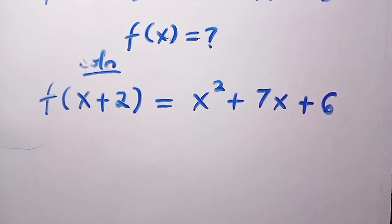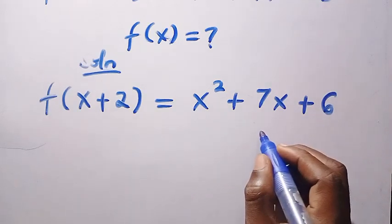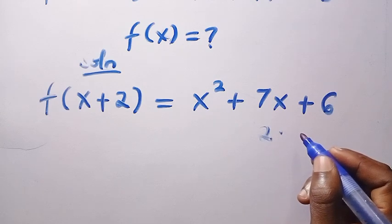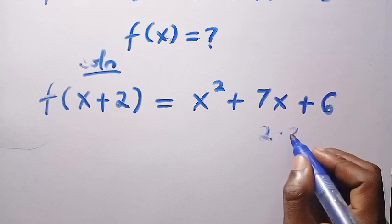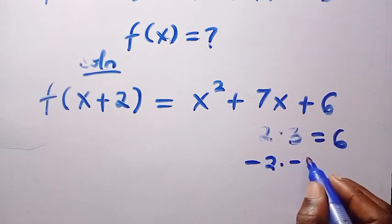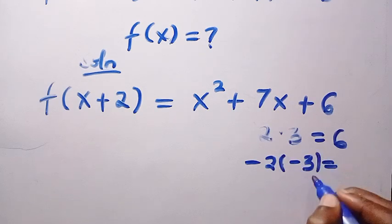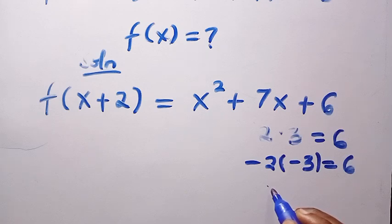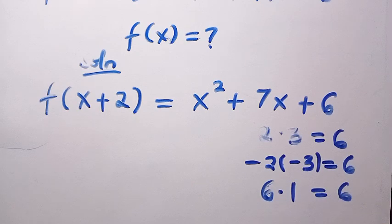From here, 6 can be 2 multiplied by 3. So if we multiply 2 by 3, we are going to get 6. And also, if we say minus 2 multiplied by minus 3, this gives us 6. And again, let's say we have 6 plus 1. That also gives us 6. Or let's say 6 multiplied by 1. So that gives us 6. Here are the factors of 6.